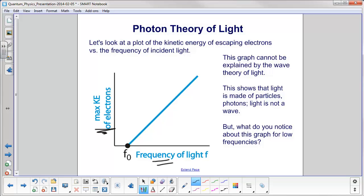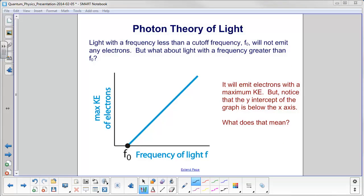But what do you notice about the graph for low frequencies? So low frequencies are down this side of the x-axis. At low frequencies down here, below this cutoff frequency, we notice that no electrons are emitted.